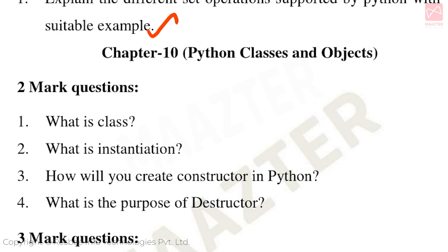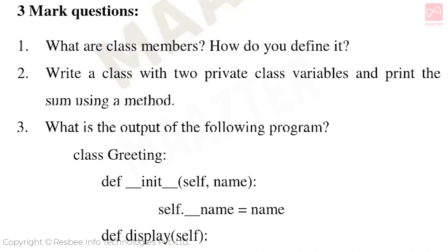Chapter 10: Python Classes and Objects. Important 2-mark questions: What is a class? What is instantiation? How will you create a constructor in Python? What is the purpose of a destructor? Important 3-mark questions: What are class members? How do you define them? Write a class with 2 private class variables and print the sum using a method. Also, a program is given and you need to find the output.